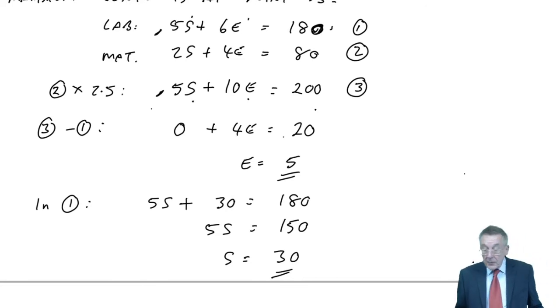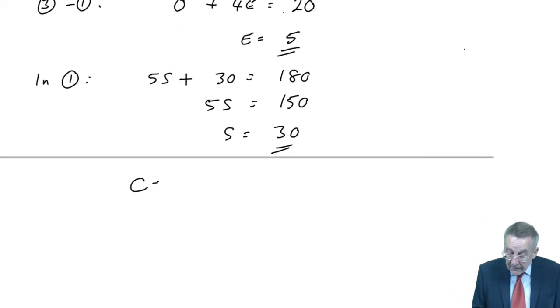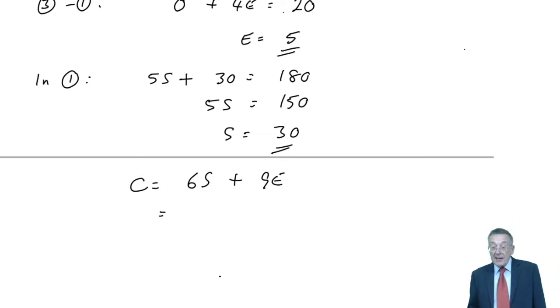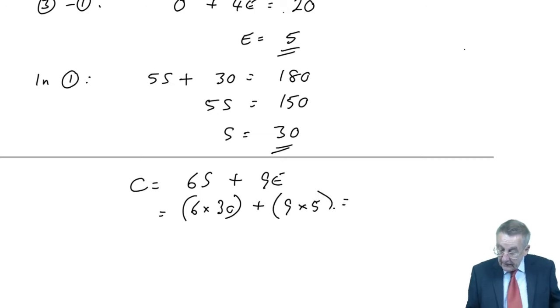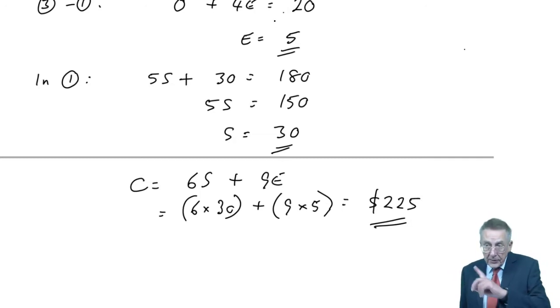And again we could have subtracted one from the other. I'd have got S, but it would have been the same answer. So there's how we're going to produce it. It will be 5 executive chairs, 30 standard chairs. The question also though said what's the contribution that we'll get? Well, of course that's easy. We've written down right from the very beginning, the contribution is 6S plus 9E.